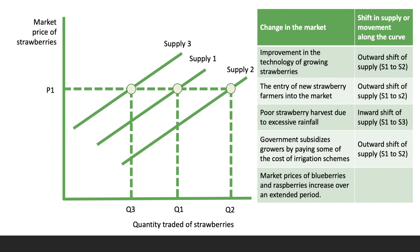A subsidy lowers costs, causing an outward shift and an increase in supply. The fifth and trickiest change: market prices of blueberries and raspberries increase over an extended period. Assuming blueberries and raspberries are alternative crops in competitive supply with strawberries, the answer is an inward shift of supply. As profitability of growing raspberries and blueberries increases, some farmers may decide to give over land or polytunnels to an alternative crop, leading to a decrease in the supply of strawberries over time.